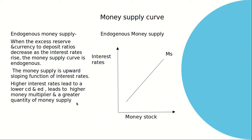Endogenous money supply. It is upward sloping. As the interest rate rises, money supply will increase, when the excess reserve and currency-to-deposit ratio decreases. As the interest rate rises, the money supply curve is known as endogenous, and the money supply is an upward sloping function of the interest rate.